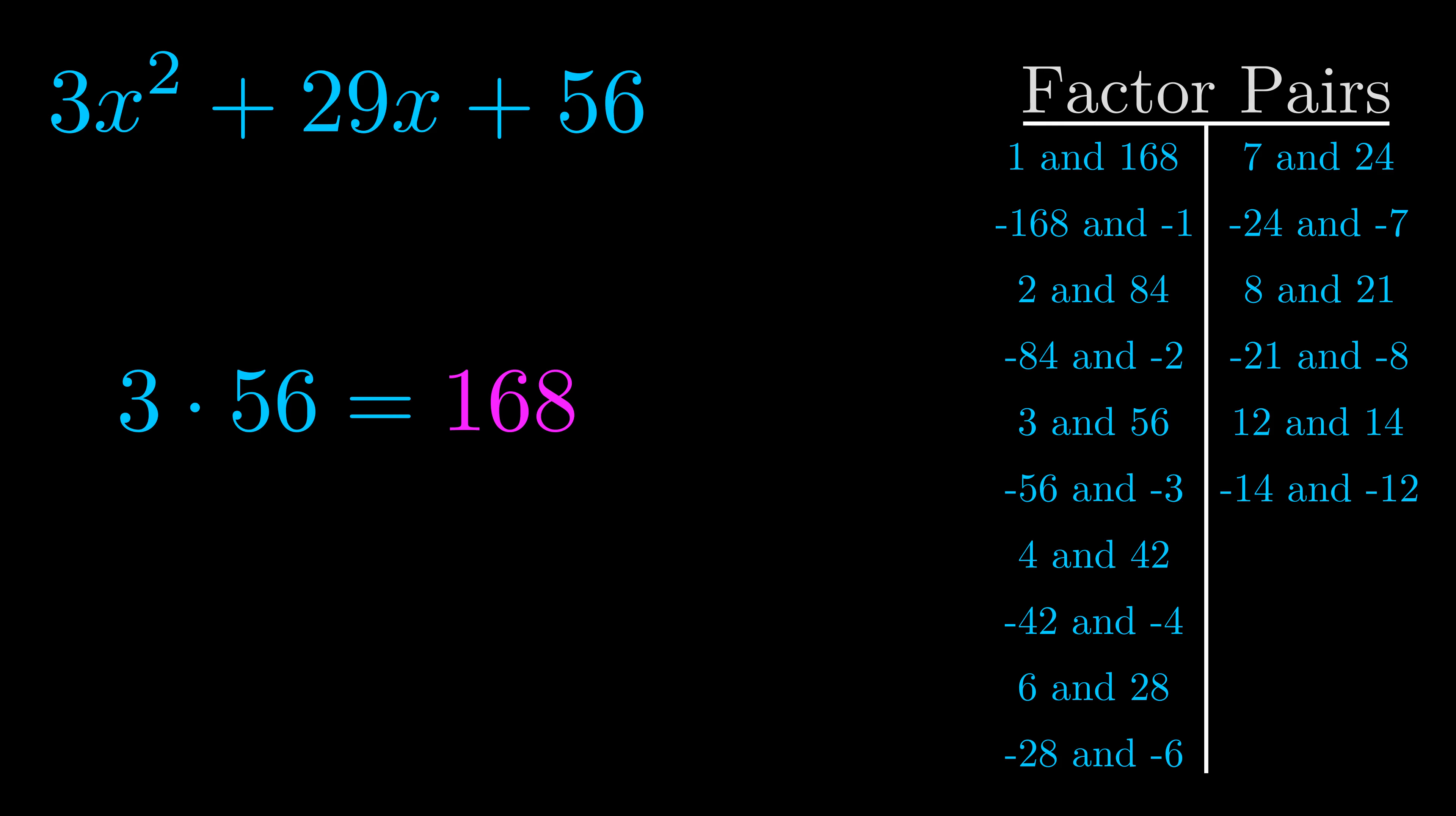The b value is the coefficient on the x term. That's the middle term, the one that we haven't done anything with yet. And really this is the only factor pair that we need.